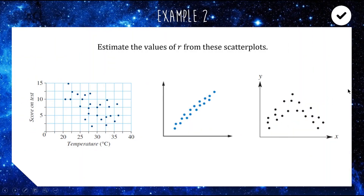For the next one — this is your bread-and-butter HSC multiple choice question. They'll give you a scatter plot and say: pick the value of r. Pause the video and think how you would rate these scatter plots in terms of correlation from negative one to one.